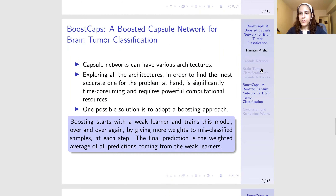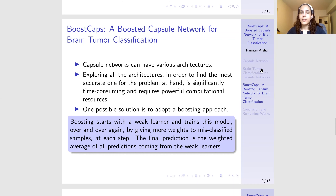There is still one problem that we need to address, which is the main goal of our study for EMBC 2020. Even though CAPSnet networks are more successful than CNNs in our particular problem, we still need to explore different architectures possible within CAPSnet to find the best one that best fits our problem. This is not possible because we can have an infinite number of architectures based on number of layers, number of neurons, and even the type of activation function. Exploring all these architectures is time consuming and requires powerful computational resources.